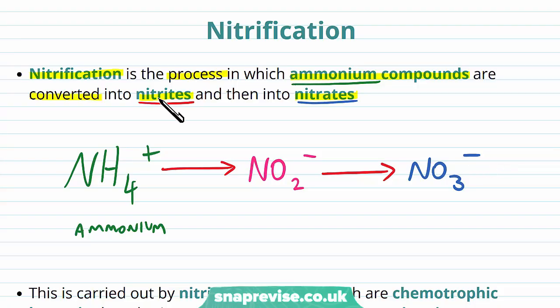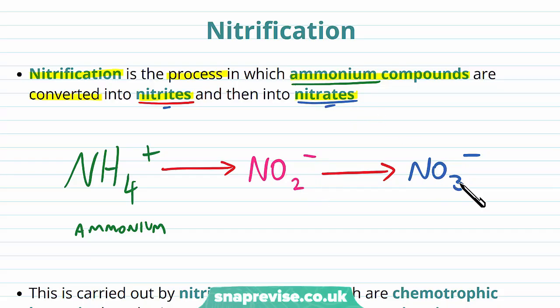The difference between nitrites and nitrates is that nitrite is NO2-, nitrate is NO3-, and ammonium is NH4+.